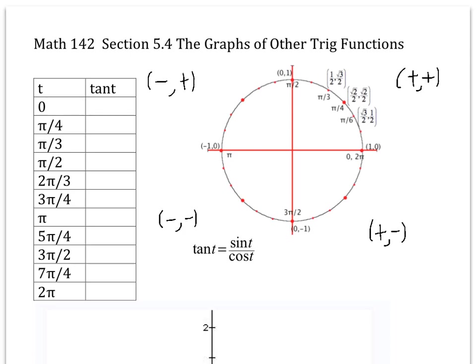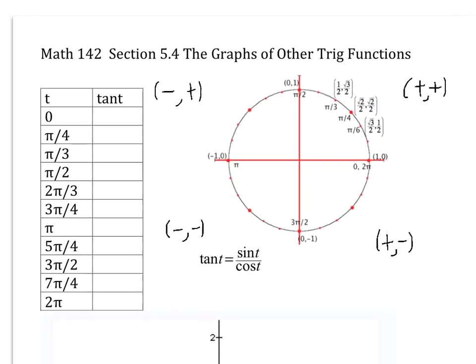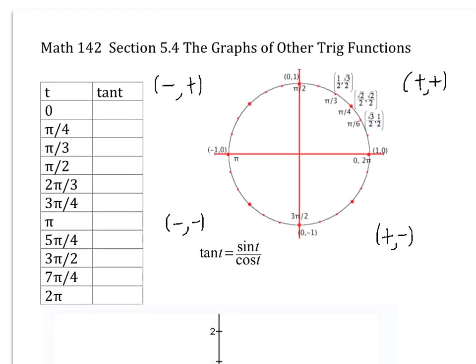Let's plot some points. At t equals zero, it's zero over one, which is zero. At pi over four, it's radical two over two divided by radical two over two, which is just one. At pi over three, it's radical three over two divided by one half, so it's radical three. At pi over two, it's undefined — it's going to be undefined whenever the x-coordinate is zero. So it's undefined at pi over two and at three pi over two.